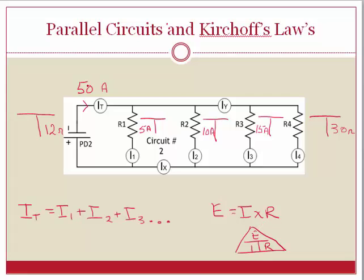If I look around, I can see that I have 50 amps here, which is my I total. I can take that 50 amps and put it into my supply T. Then 50 times 12 will give me the voltage in that circuit, or 600 volts.